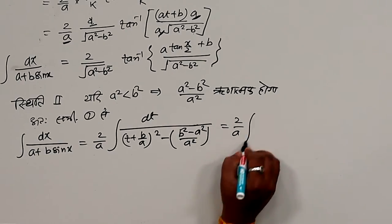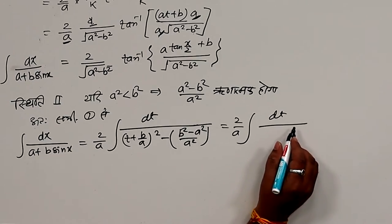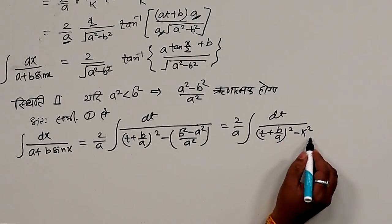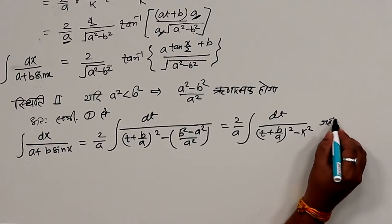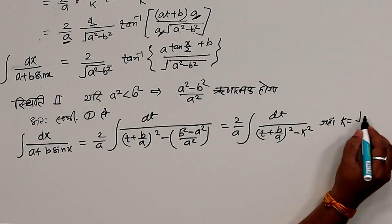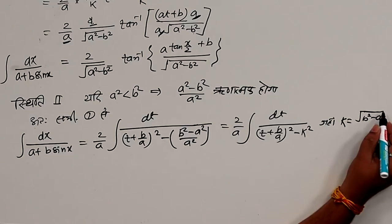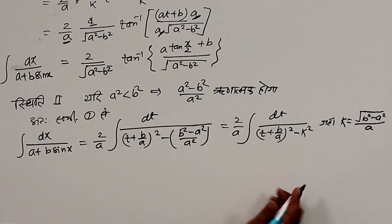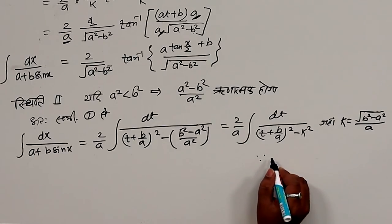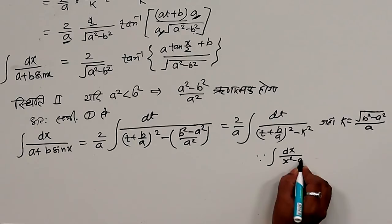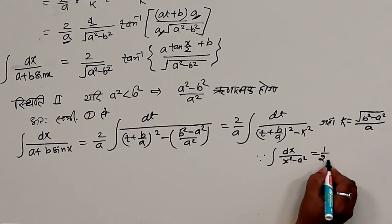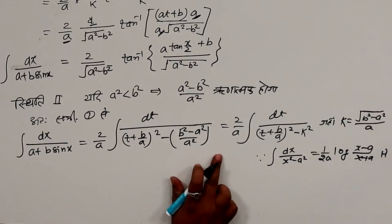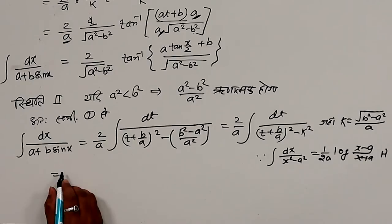इसे आगे लिखा जा सकता है: (2/a) ∫ dt / [(t + b/a)² − k²], जहाँ k = √(b²−a²)/a। इस प्रकार के सूत्र ∫ dx/(x²−a²) = (1/2a)·log|(x−a)/(x+a)| का उपयोग करके इसका समाकलन लिखेंगे।